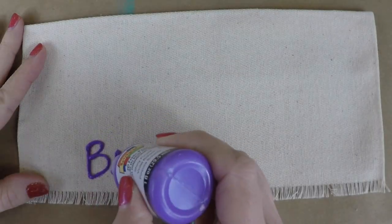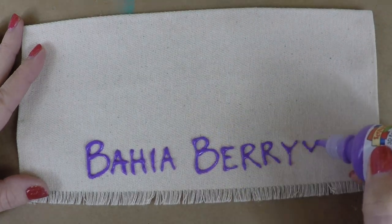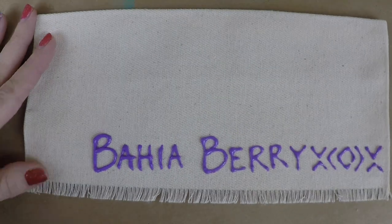Now use puffy paint to write the name of your fruit stand on it and to do a cute little design. You don't have to use the same name as Leah's.